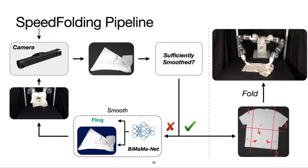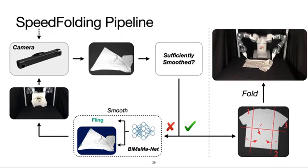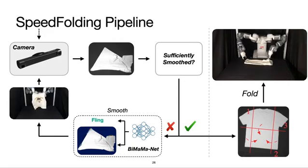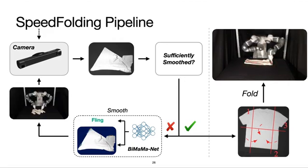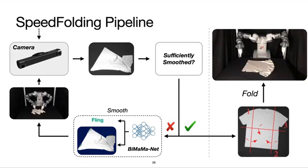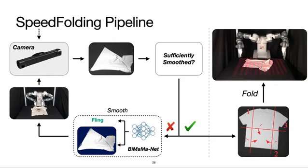Now that we've covered both smoothing and folding, the full pipeline starts with sensing the current state of the garment and determining whether it's sufficiently smooth. If it is, the robot then follows the folding steps as described earlier. Otherwise, BiMamaNet predicts the primitive and the grasp points to further smooth it and repeat.